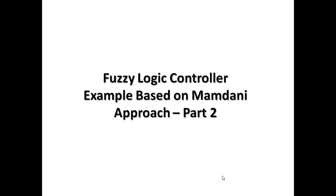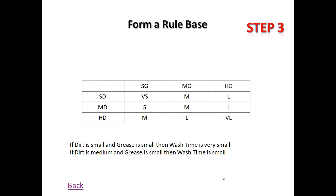Welcome back. In the second part of the fuzzy logic controller example based on the Mamdani approach, we recap the previous video where we discussed finding the crisp output using this approach. The first step was to find all the input linguistic variables, then the output linguistic variables, and finally compute the membership values of all input and output variables. Steps one and two are already complete.